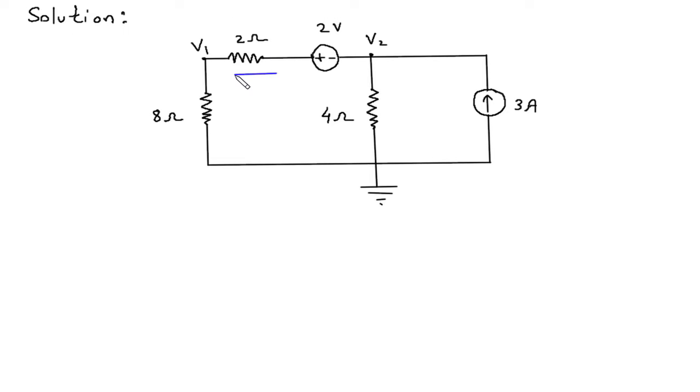Let's assume the direction of current. Let's say this is current I1, this is current I2.